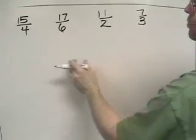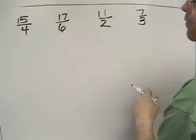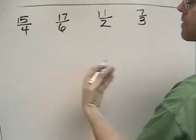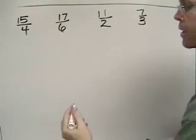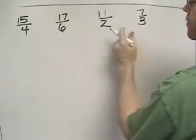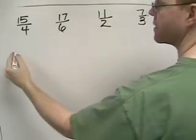Here I'm going to show you how to arrange these four improper fractions in order from least to greatest. And the first thing we're going to do is convert each of these improper fractions into a mixed number.